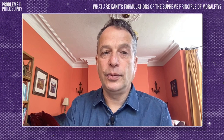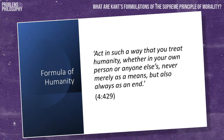Moreover, once this is recognised, we can also see that another formulation of that principle is possible, namely the so-called formula of humanity: act in such a way that you treat humanity, whether in your own person or anyone else's, never merely as a means, but also always as an end. To show that this is a plausible variant, Kant then runs through the same examples as before — of suicide, false promising, neglecting one's talents, and neglecting other people — to establish that one can also show how these cases violate this principle as well.